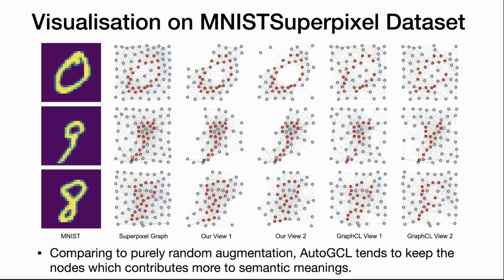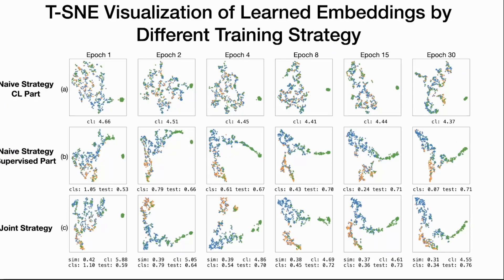Now let's look at some visualization results. We conducted experiments on the MNIST superpixel dataset and compared our view generators with GraphCL view generators. In the superpixel graph, red nodes denote non-zero node features and blue nodes denote zero node features. Comparing to purely random augmentation, our Auto-GCL view generators tend to keep the nodes that contribute more to semantic meaning. We also have a TSNE visualization of learned embeddings by different training strategies — the joint strategy embeddings are more separated across different class labels.